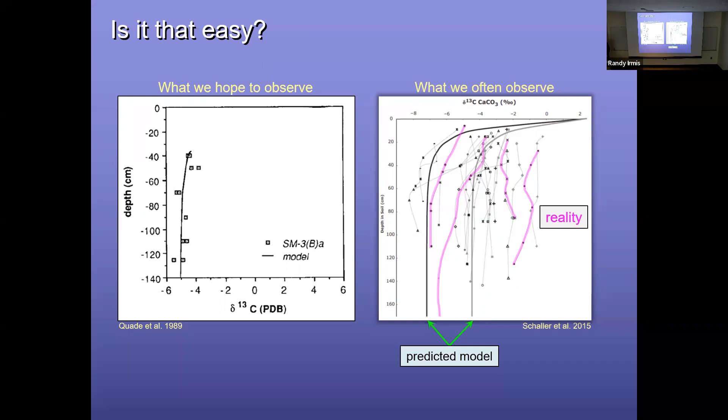So can we really assume that if we just take a point sample at depth that it's representing the isotopic value at equilibrium? Maybe not. And these are, each of these dots are just individual analyses. So that's one carbonate nodule per level within the soil profile.